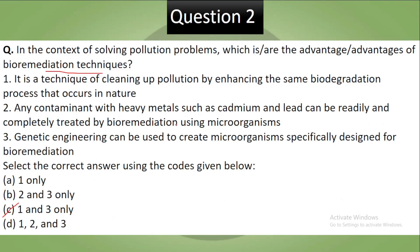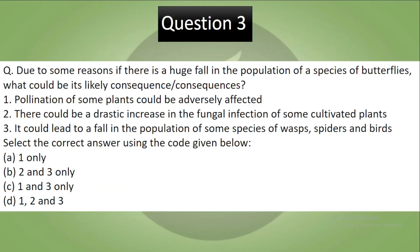Therefore your answer is C. Question 3: Due to some reasons, if there is a huge fall in the population of a species of butterflies, what could be its likely consequences? Statement 1: Pollination of some plants could be adversely affected. Statement 2: There could be a drastic increase in the fungal infection in some cultivated plants. Statement 3: It could lead to a fall in the population of some species of wasps, spiders, and birds. Select the correct answer using the codes given below. Pause the video and try to think about it.